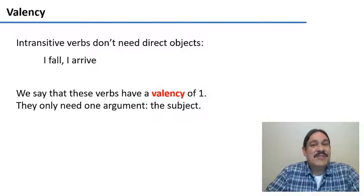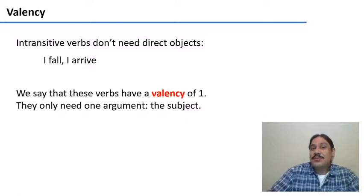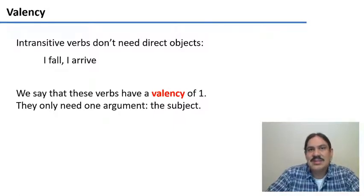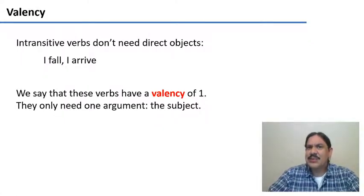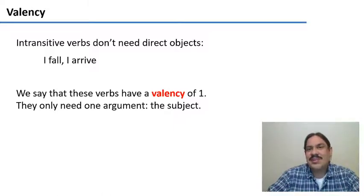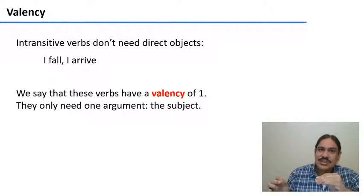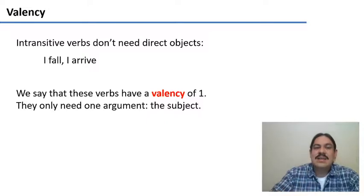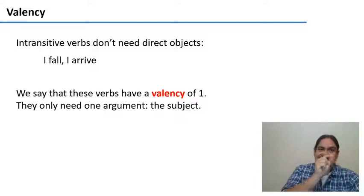So let's start with the concept of valency. There are verbs, like intransitive verbs, that don't need direct objects. As a matter of fact, some of them cannot take direct objects. For example, in 'I fall,' I can't fall something — it always has to be just 'I fall.' In 'I arrive,' I also cannot arrive something; I cannot perform the action of arriving unto something else. These verbs have a valency of one, because they only need one argument to function: they need the subject, as in 'I fall.'